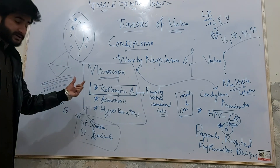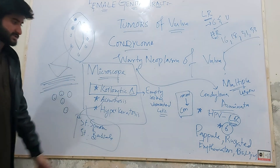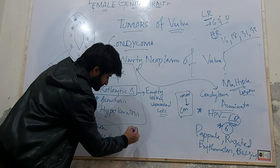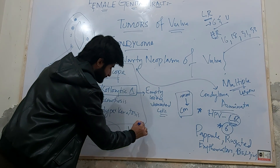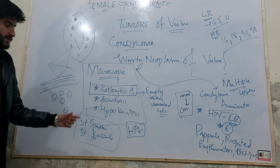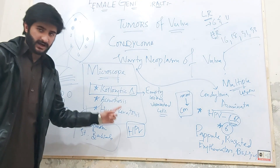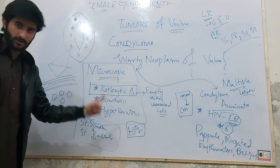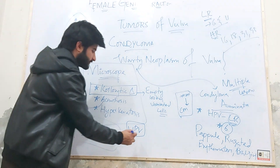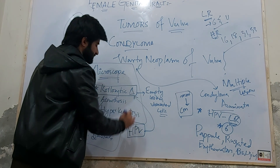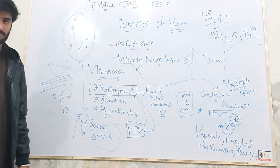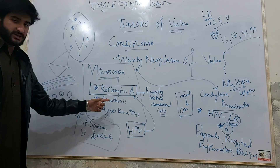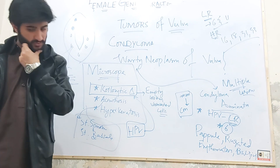Remember this: whenever there is HPV — whether it is high-risk HPV or low-risk HPV — there will always be koilocytic change. HPV and koilocytic change always come together.